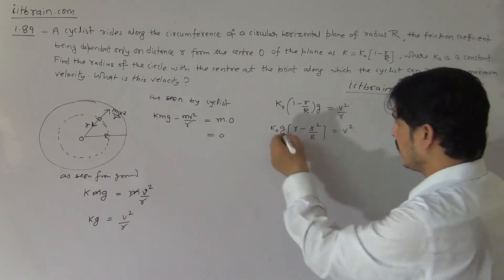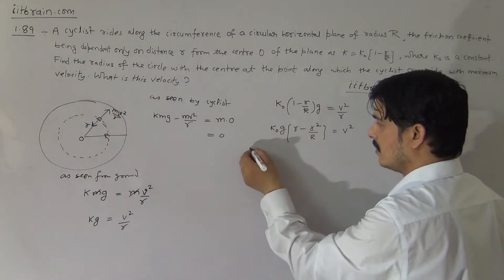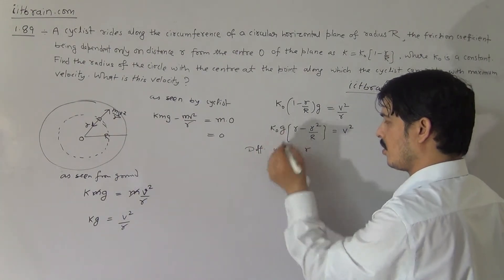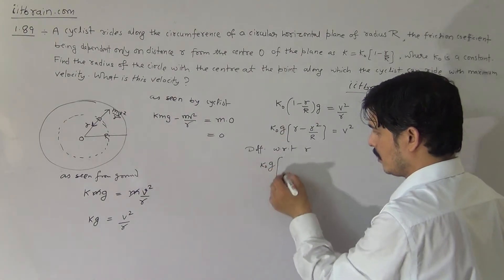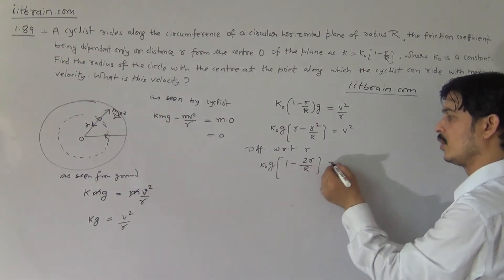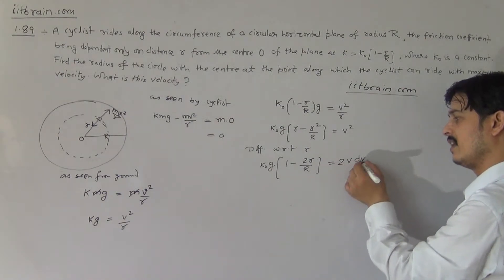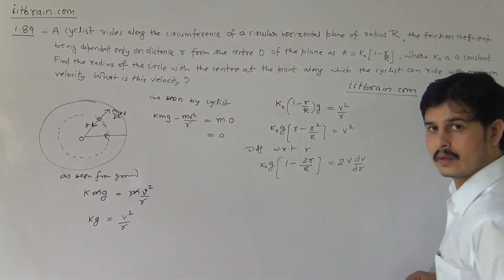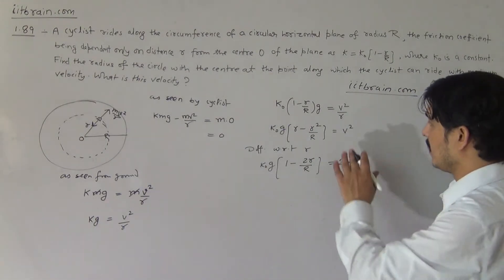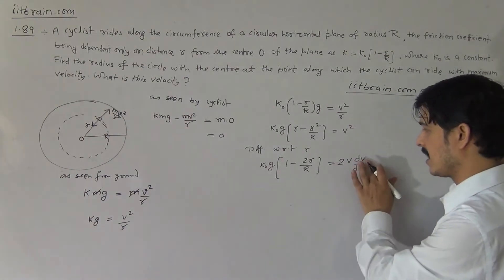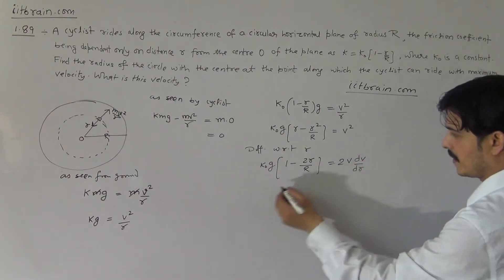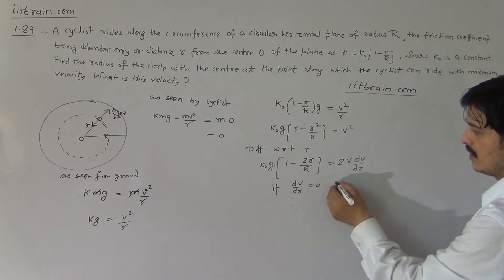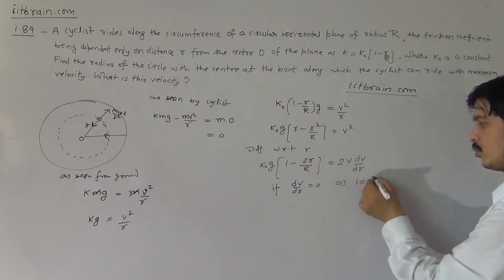If we differentiate with respect to small r, we will get k naught g times one minus two r by capital R equal to two v dv by dr. If dv by dr is zero, then this implies that one equal to two r by capital R.